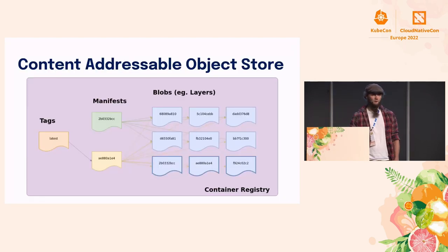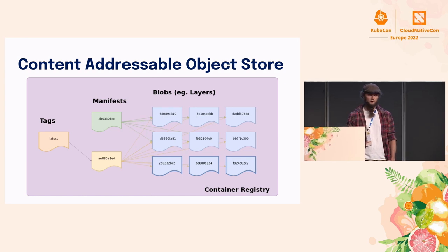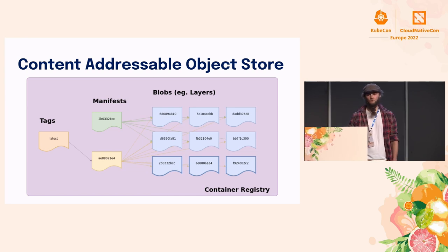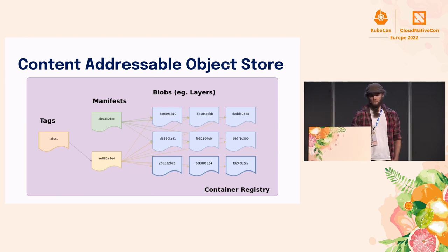We know what a container registry does for us, but what's underneath? It's a content-addressable data store. It's an object store where you can put data, and it's content-addressable — meaning that for each object in the store, instead of being identified by some arbitrary key or path name, it's identified by a digest of its contents.